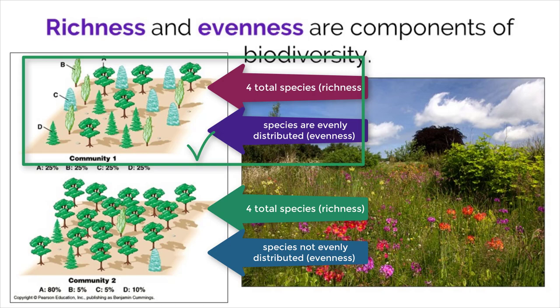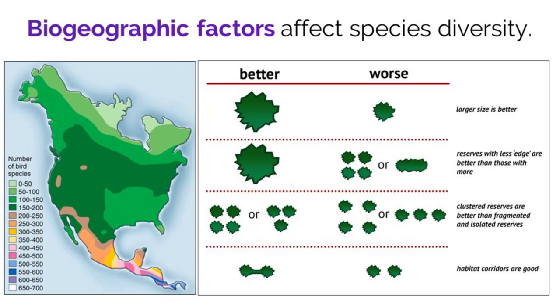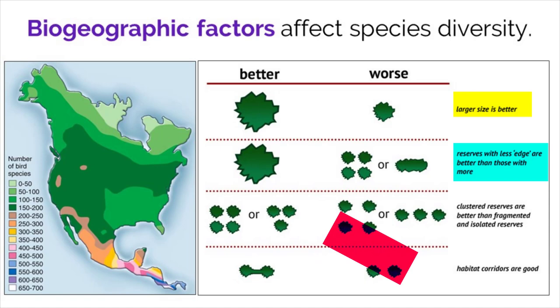High richness and similar abundance in evenness represents a very diverse ecosystem. Biodiversity in an ecosystem can be affected by many factors: size, edge effect, reserves, and corridors all impact the biodiversity seen in ecosystems.